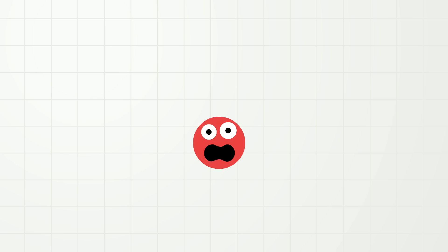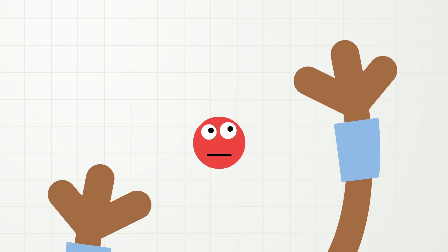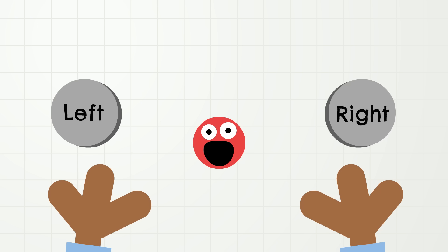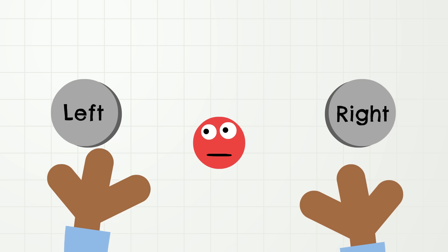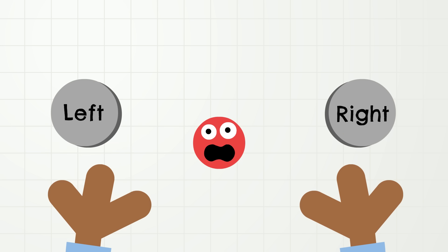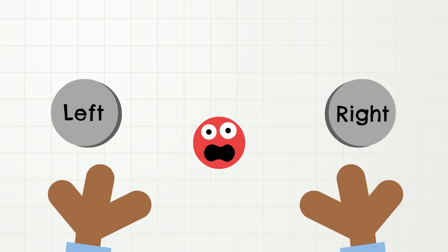Let us practice some patterns together, and first we are going to practice with our hands. Most people have two hands: a left hand and a right hand. Let's make a pattern. When I say left, raise your left hand high. When I say right, raise your right hand high. You can say the words with me too! Ready? Go! Left, right, left, right, left, right, left, right. Good job! Left and right repeat in the same order, so that was a pattern.